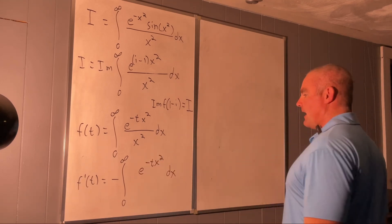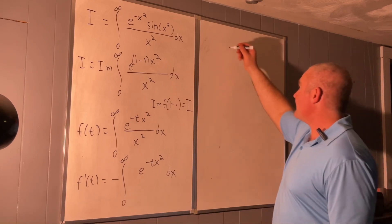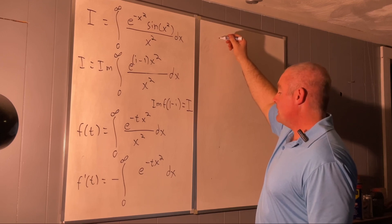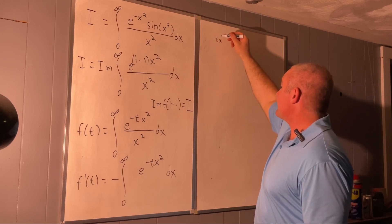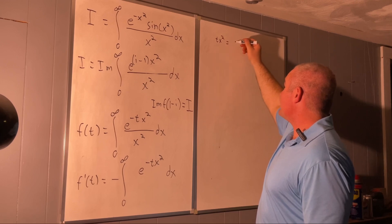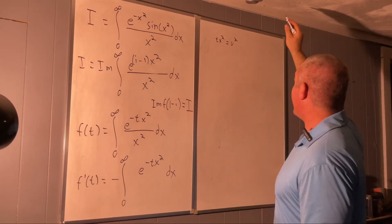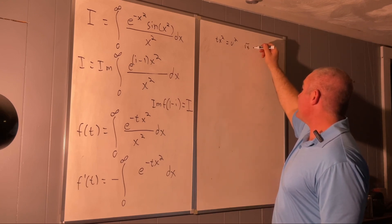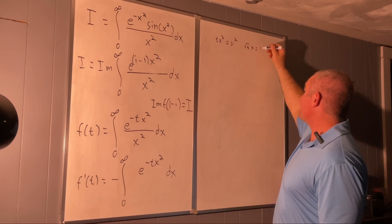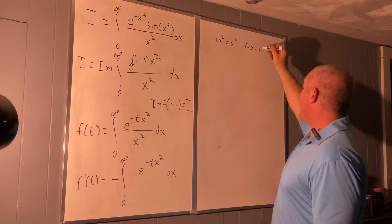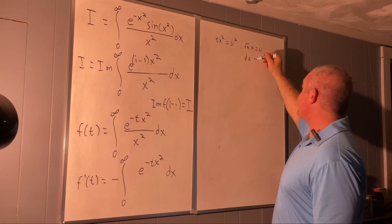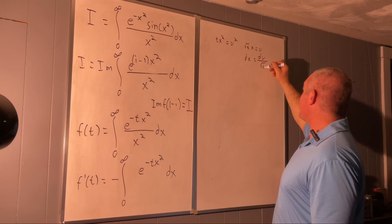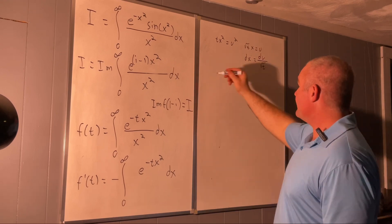So let's make the substitution that tx squared equals u squared. Taking the square root on both sides gives us the square root of t times x equals u. Therefore dx equals du over the square root of t.